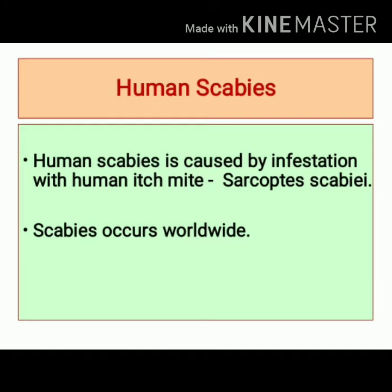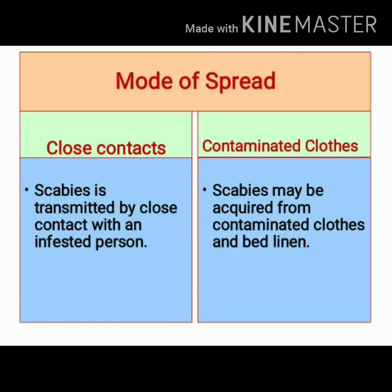Now let's understand human scabies. Human scabies is caused by infestation with the human itch mite, Sarcoptes scabiei. Human scabies shows global prevalence. Scabies may be transmitted by close contact or even through contaminated clothes. Close contact with an infested person plays a major role in transmission. Sometimes scabies may also be acquired from contaminated clothes and bed linen.